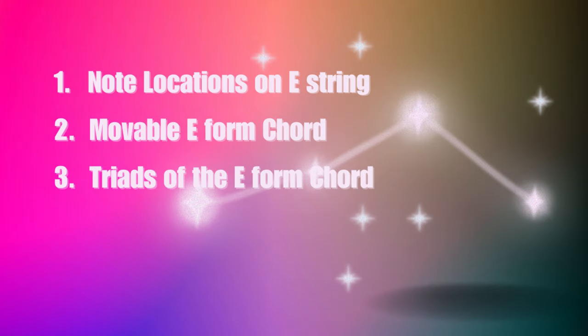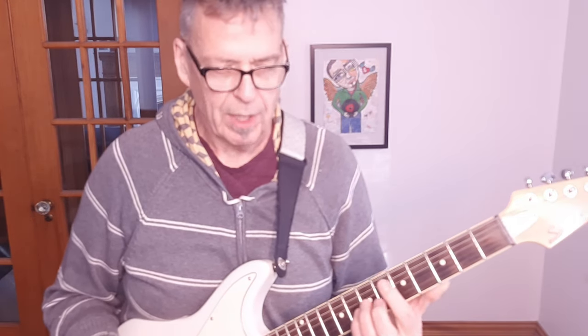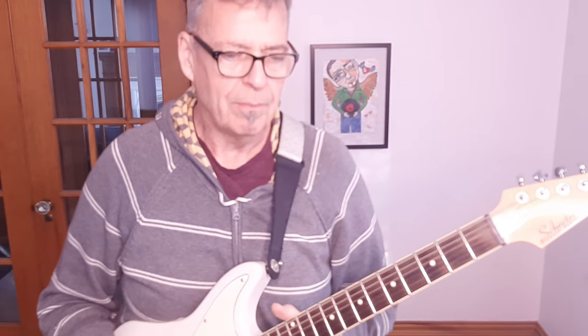Tool number one: root note locations on the E string. Tool number two: the movable E-form chord shape — that's this bad boy that we all know. And tool number three: the triads of the E-form chord shape. The triads are just sub-components of that big chord shape, and we're going to look at what they are and how to use them in this context.